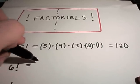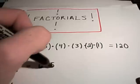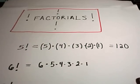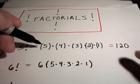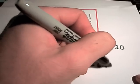Likewise, 6 factorial would be 6 times 5 times 4 times 3 times 2 times 1. And we already know that 5 factorial is 120, so 6 times 120 will give us 720.